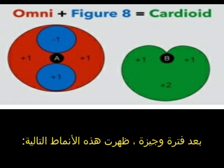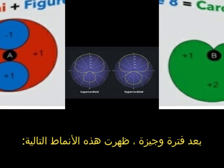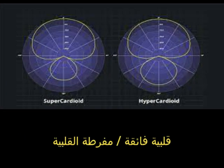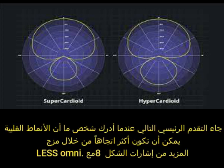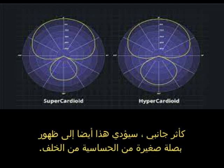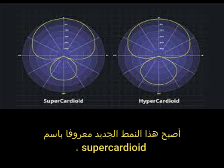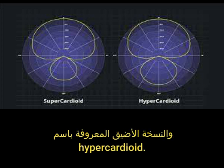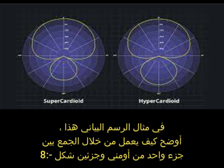Engineers then designed new cardioid capsules that were hybrids of the original two designs, leading to super cardioid and hyper cardioid patterns. The next major advancement came when someone realized that cardioid patterns could be made even more directional by mixing more figure eight signal with less omni. As a side effect, this created a small bulb of sensitivity emerging from the rear — the super cardioid pattern. The narrower version became known as hyper cardioid, created by combining one part omni with a larger part figure eight.